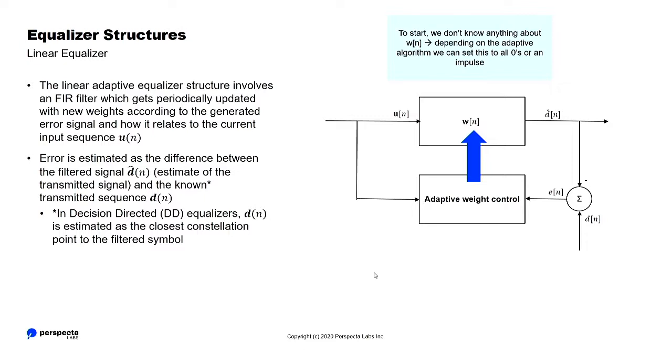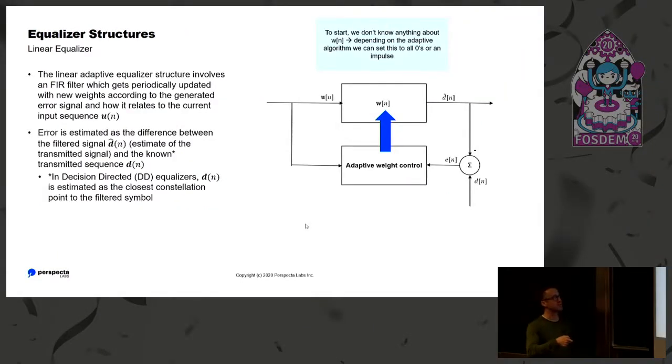So the structure, this is the structure that exists in the GNU Radio blocks currently, these are linear equalizers. A linear equalizer is our received signal passed through some filter that gets updated in some way. So just an FIR filter, we come up with some estimate of the received signal after we've gone through this filter, and then we calculate error. The error and the received signal are somehow used to update this filter. We'll talk about these adaptive algorithms more in a minute. But for right now, the general structure is just FIR filter, we're going to update the taps based on our calculated error.